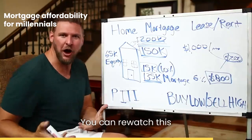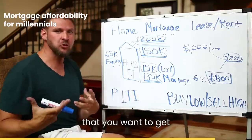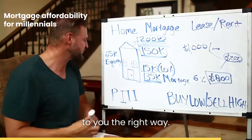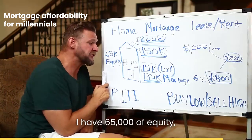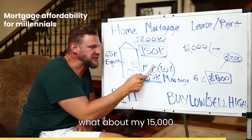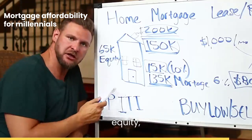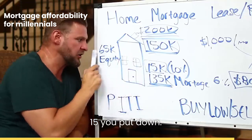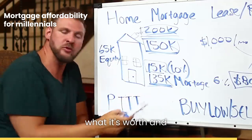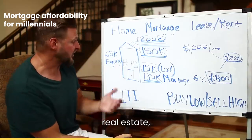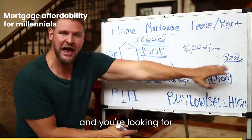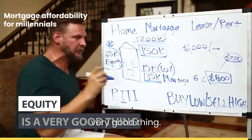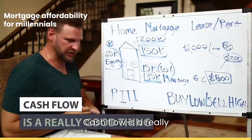Isn't this awesome? Are you learning this language? You can re-watch this video. These are the basics that you want to get really comfortable with, and literally in the beginning, just copy what I'm saying because I'm telling it to you the right way. So I have sixty-five thousand dollars of equity. You might say, 'What about my fifteen thousand that I put down?' That's not part of the equity — because you would get this fifty thousand out plus the fifteen you put down. The equity represents the total amount between what it's worth and what's owed. When you do investment real estate, you're looking for equity and you're looking for cash flow. Equity is a very good thing. Cash flow is a really good thing.